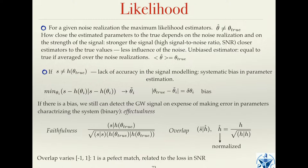The maximum likelihood estimator is not necessarily equal to the true parameters of the signal in the data. The main reason is that noise corrupts your signal, slightly changing its shape. Therefore, what you recover is not necessarily the true parameters. How close the maximum likelihood estimator is to the true values depends on how strong your signal is — the stronger the signal, the closer the estimator to the true value.